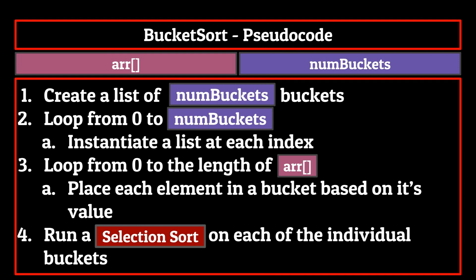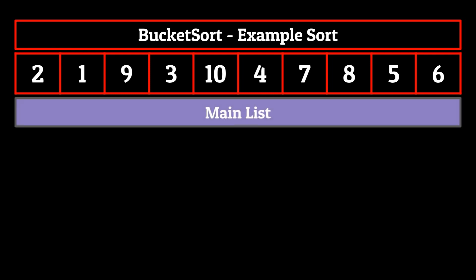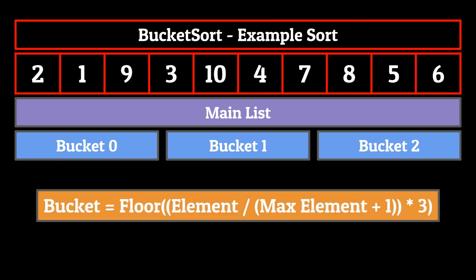Let's now go over what an example bucket sort might look like by sorting a list of 10 elements. Looking at our data set, we can see that the numbers are spaced one integer apart. Since we have such a smaller data set, I'm going to set the number of buckets as three. Now that we have everything set up, we need to come up with our hash function.